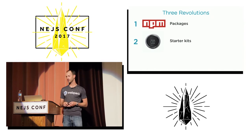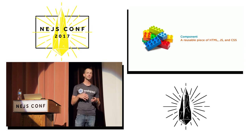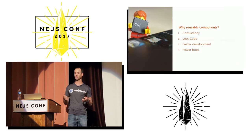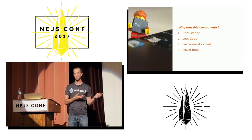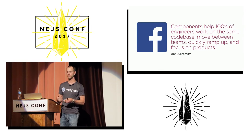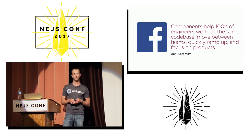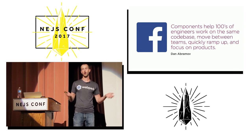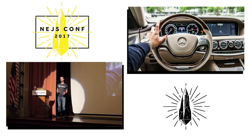We've talked about two of the three reusable revolutions — packages and starter kits. I'm going to close with the final revolution: reusable components. All of these build upon one another. A reusable component is a reusable piece of HTML, JavaScript, and CSS. We know the big reasons we want them: consistency, less code, faster development, fewer bugs. At Facebook they're heavily invested in the component model using React, finding that components help hundreds of engineers work on the same codebase, move between teams quickly, ramp up fast, and focus on products.